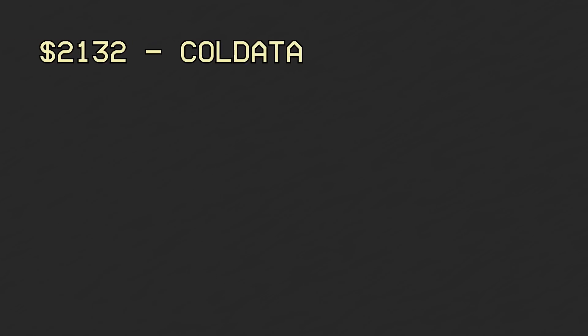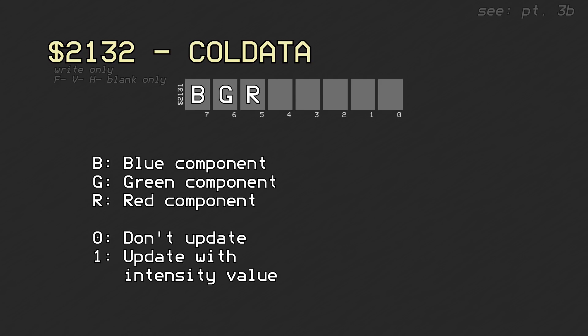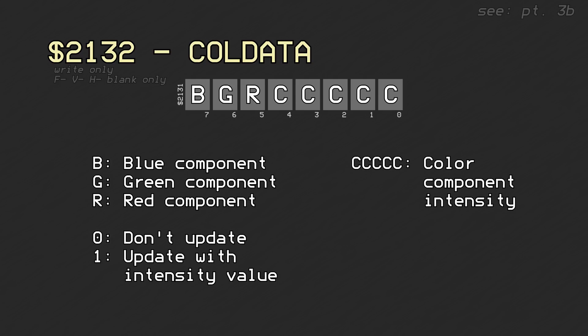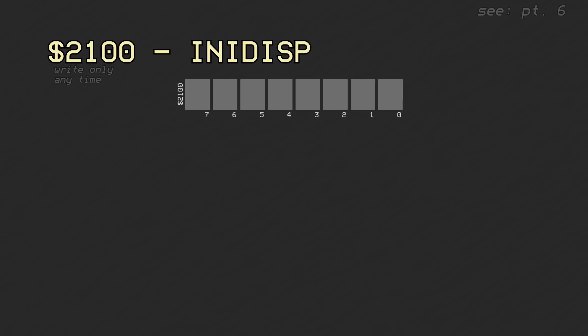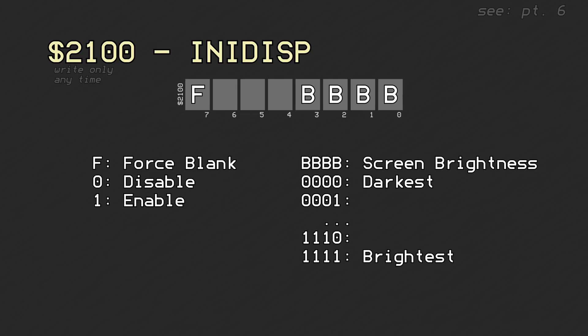PPU register 0x2132 is where the fixed color is determined. Rather than writing color data directly, you specify each color component at a time. The upper three bits denote which color component is being written via the lower five bits. The highest bit in PPU register 0x2100 toggles forced blank, which turns the electron beam in the television off completely. The lower four bits control the intensity of the beam, which controls the brightness of the image.